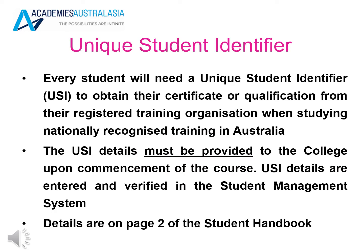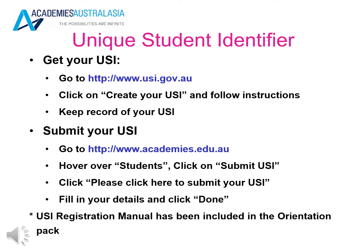Every student will need a unique student identifier, or USI, to obtain their certificate or qualification from their registered training organisation when studying nationally recognised training in Australia. The USI details must be provided to the college upon commencement of the course and are entered and verified in the student management system. Please refer to the student handbook for more details. To get your USI, go to www.usi.gov.au, click on 'Create your USI' and follow the instructions. Keep a record of your USI.